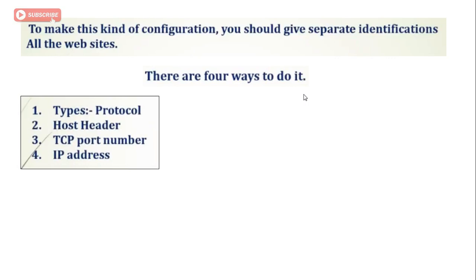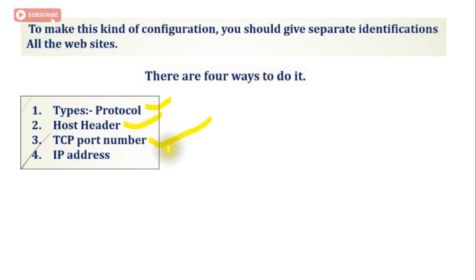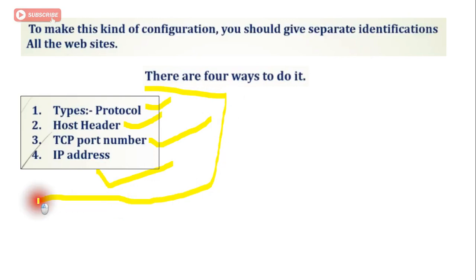The first option is the protocol type — HTTP or HTTPS. The second one is the host header, used for identification of that particular website. The third one is the TCP port number; we can use a port number as well, which I spoke about in an earlier video. The fourth one is IP addresses. By using all four of these options, we can give separate identification to all websites individually.